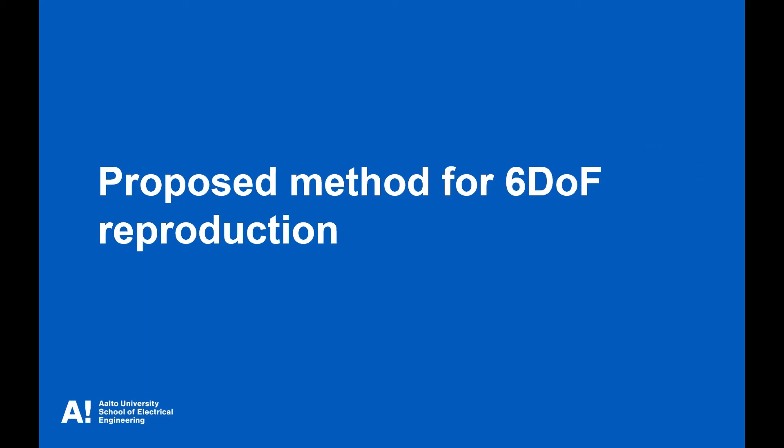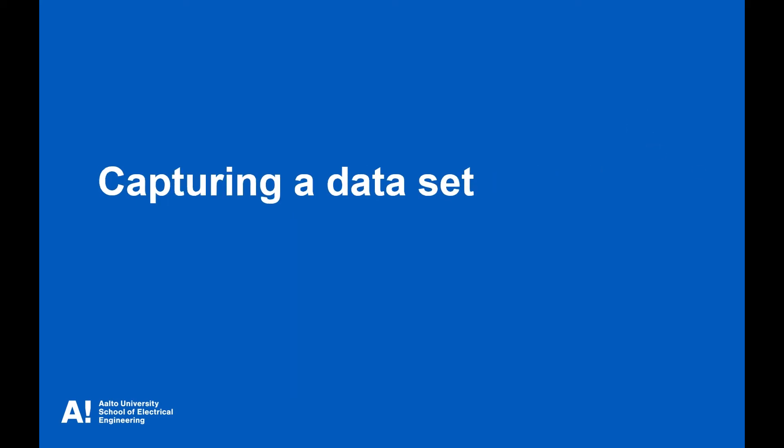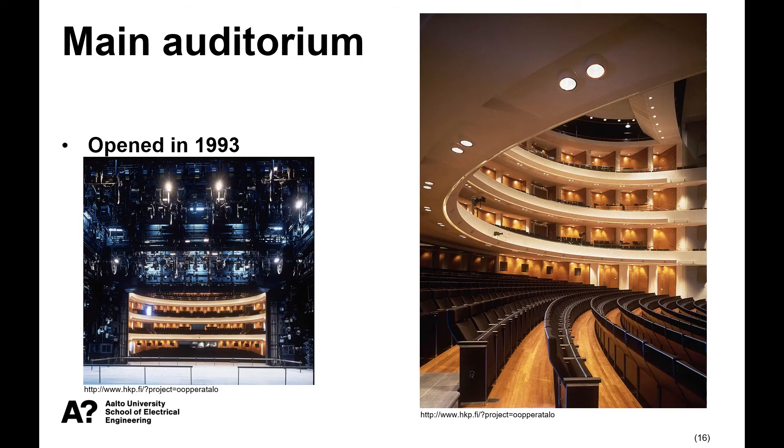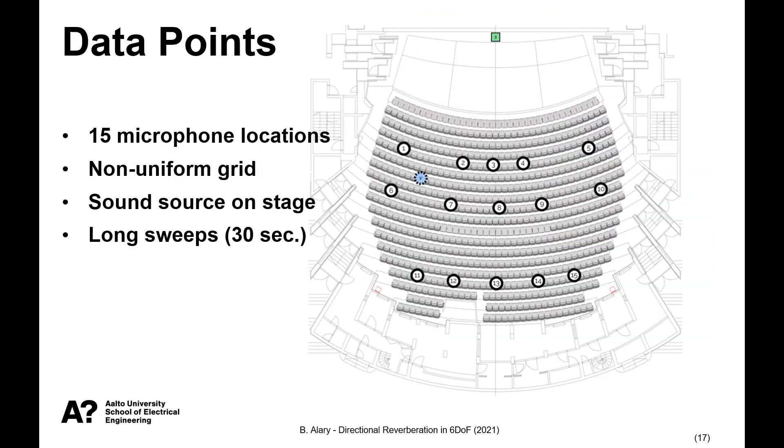Now let's go over the proposed method. First, we need to capture a data set. For this, we visited the Finnish National Opera and Ballet in Helsinki. They have their main auditorium that was built in 1993, a fairly modern opera hall. And we went there with a microphone and we captured a set of 15 microphone positions for a single sound source location in this experiment. So the source was located in the center of the main stage and we distributed on a non-uniform grid the microphone positions.